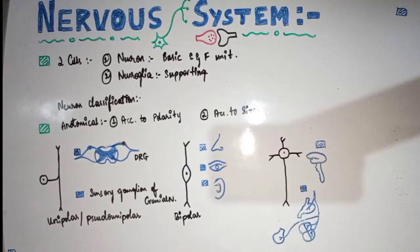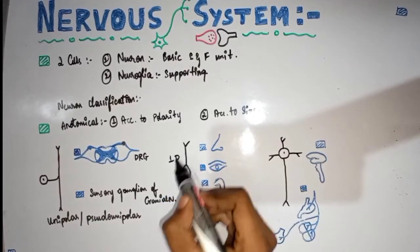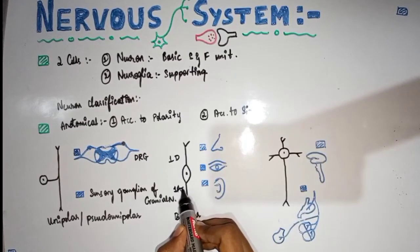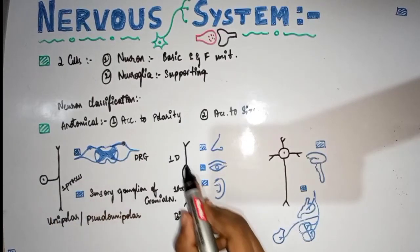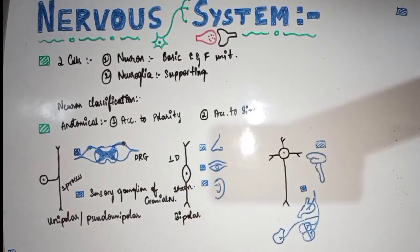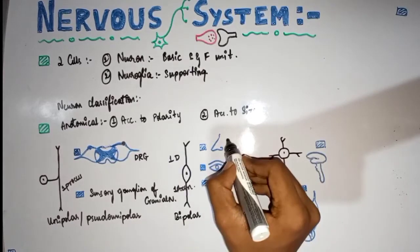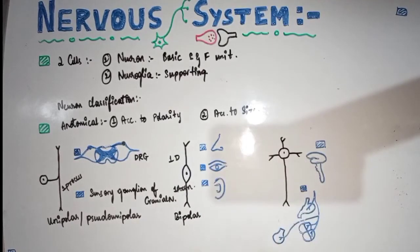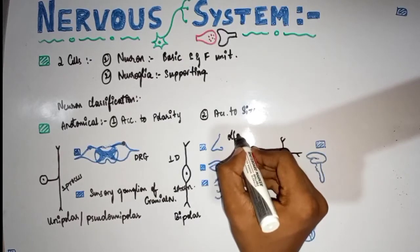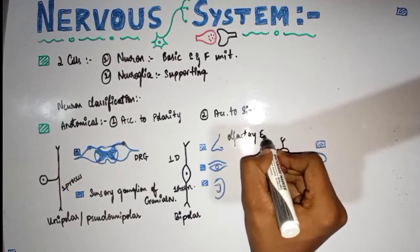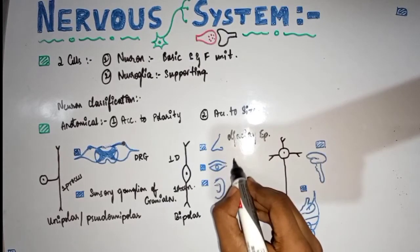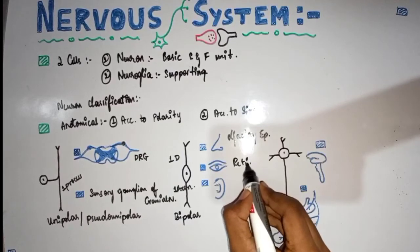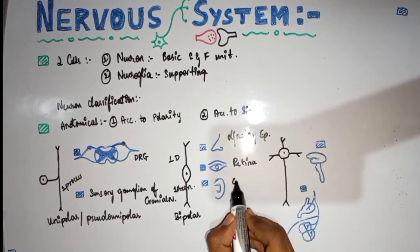The second type is the bipolar neuron, which has one dendrite and one axon, making it bipolar. It is found in the olfactory epithelium, concerned with smell. It is also found in the retina and in the cochlear and vestibular nerve ganglia.